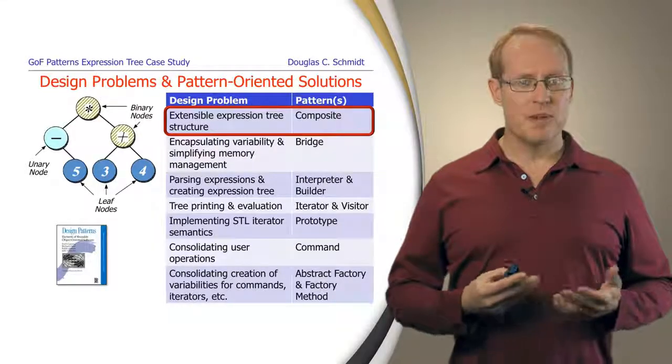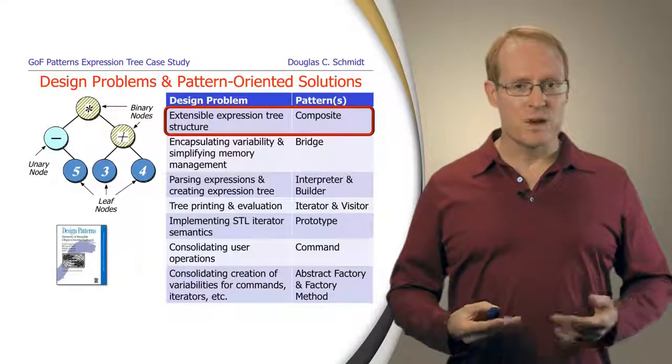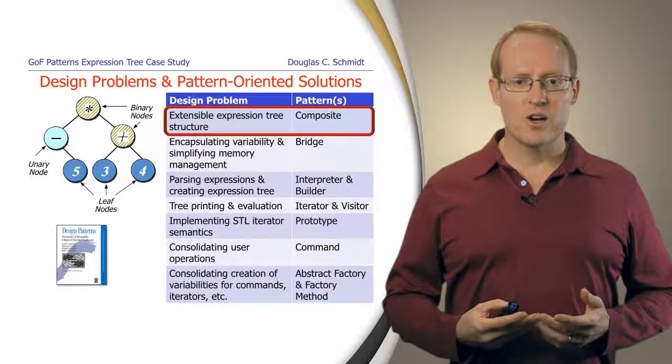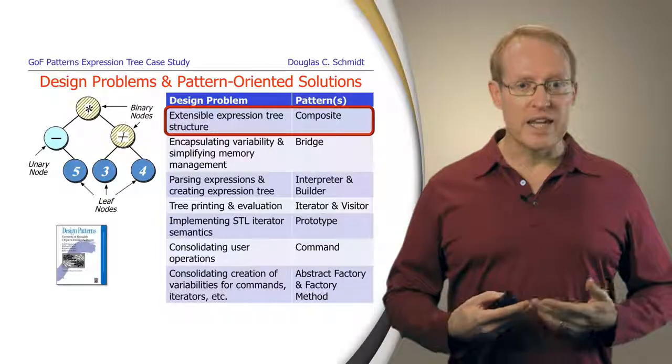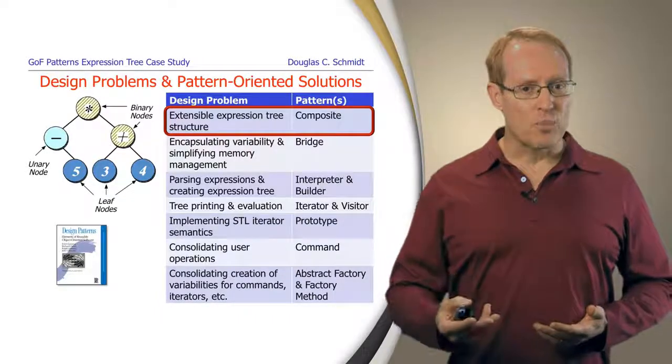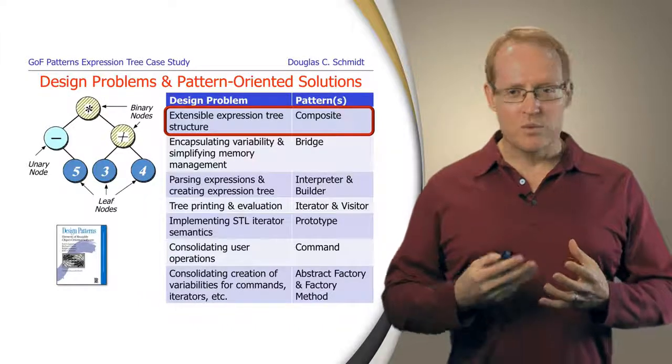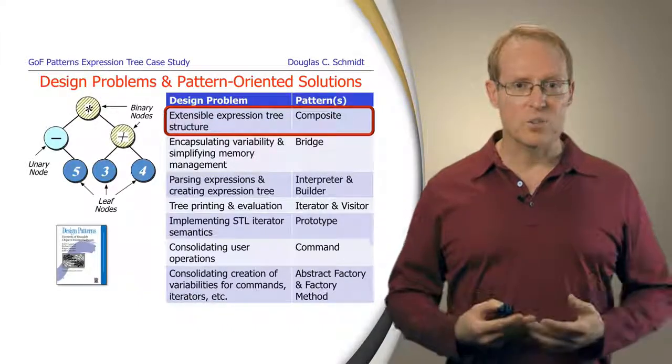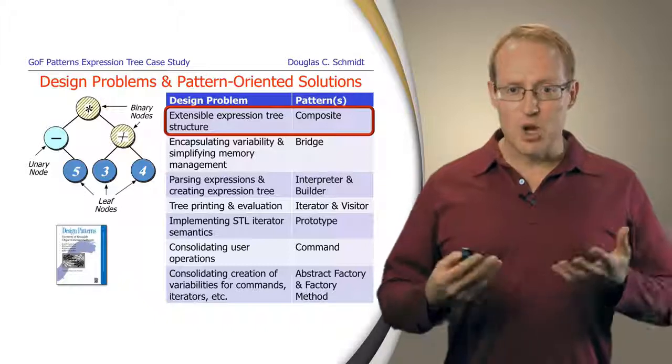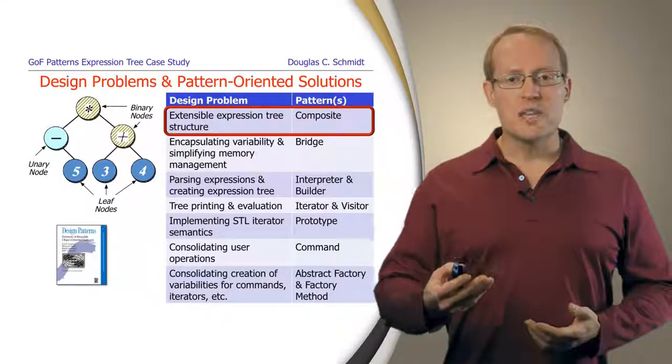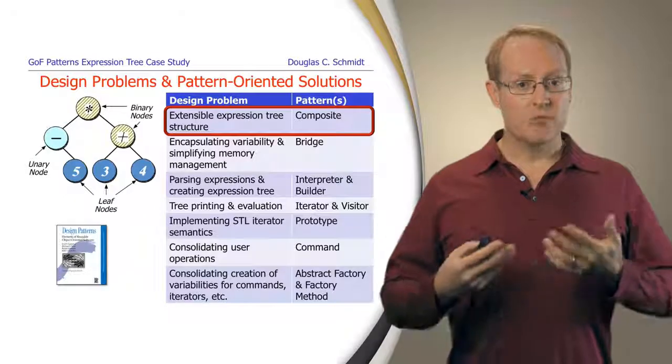So let's now talk about some of the patterns that we apply in the context of our expression tree case study and the design problems these patterns address. One of the first set of problems we're dealing with is how to design the structure of the expression tree in a way that would be more extensible and easier to work with over time. If you recall the earlier part where we discussed limitations with the algorithmic decomposition approach, I mentioned how it was very tightly coupled, which meant small changes had big consequences on breaking large parts of the code. We're going to be applying a Gang of Four pattern called composite in order to structure the tree in a hierarchical and recursive form.